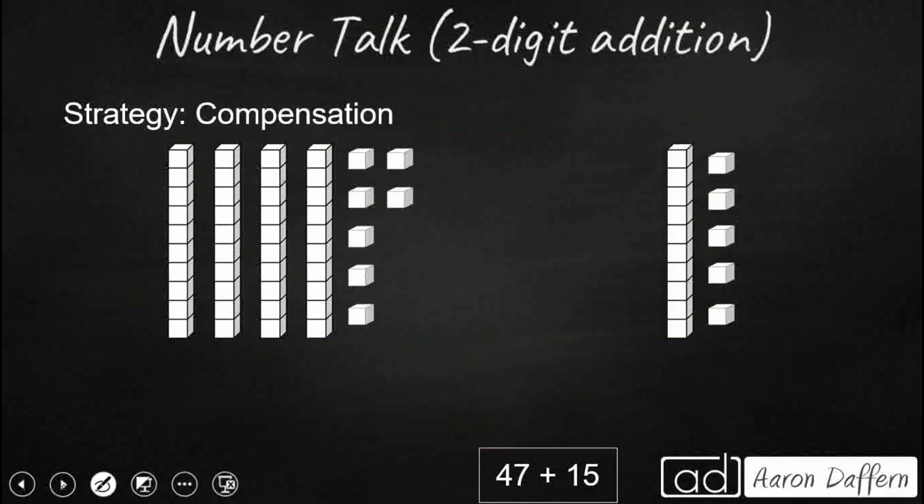The final way that I could think of was compensation. Now compensation is a little bit different. So what we're going to do is we're going to take our 47 plus 15, and we're going to say, you know what, if we could make that 47 a 50, that would be a lot easier.